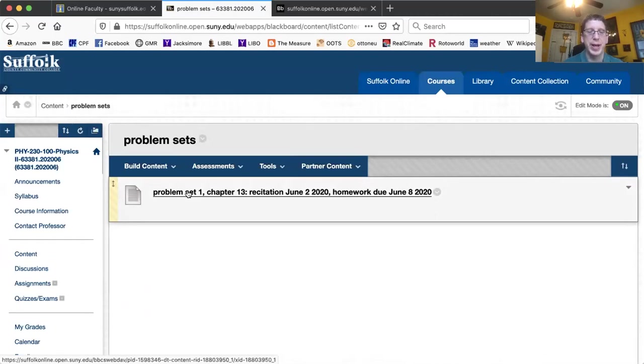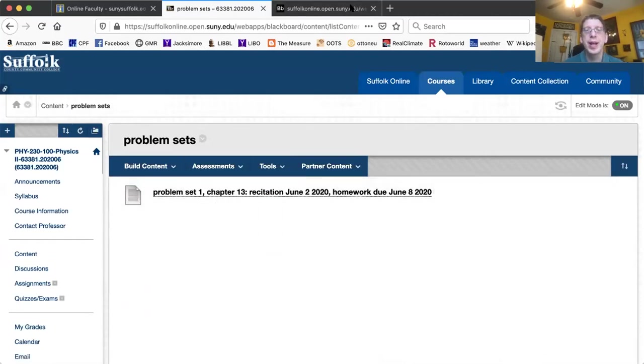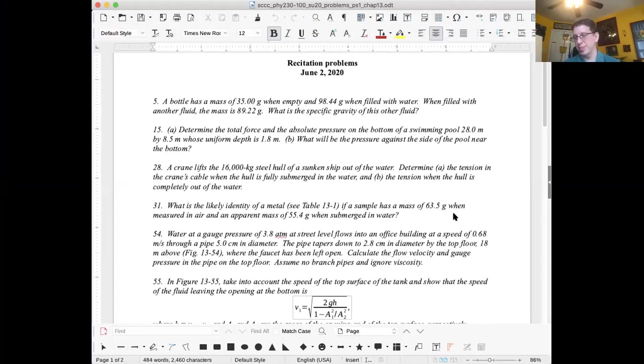It's a PDF file. Either way, you get to the problem. I'm just going to describe the six problems for you. The first problem, this is problem number five in Chapter 13 of the Giancoli book. You look at the problems at the end of the chapter and this is what you will see.